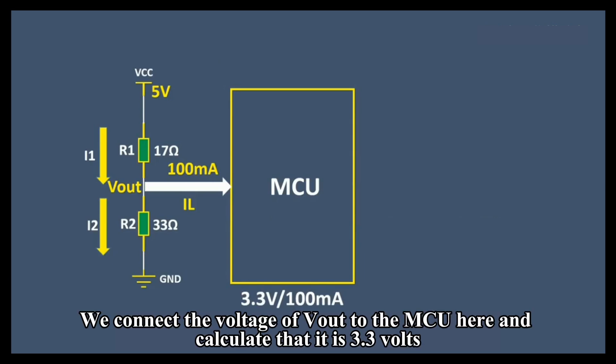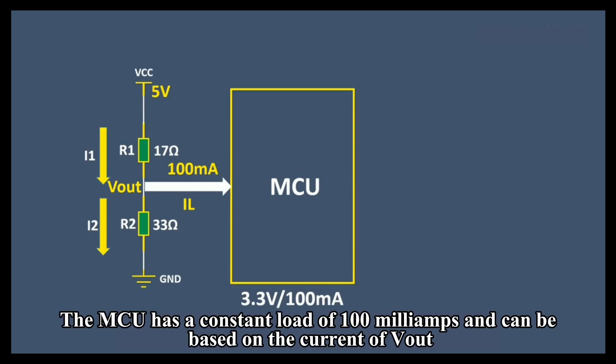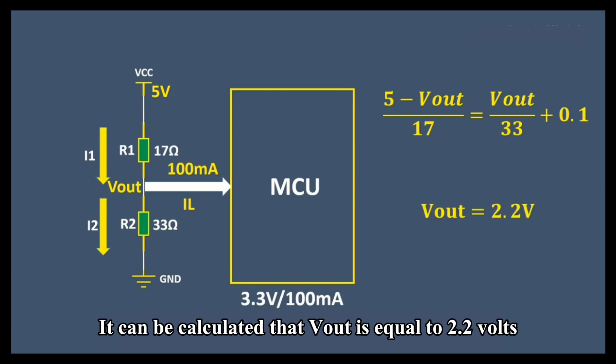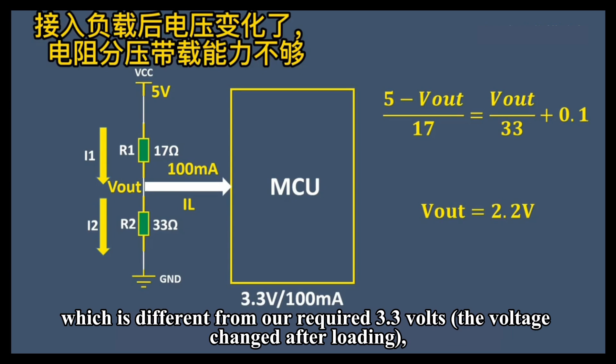We connect the voltage of Vout to the MCU here and calculate that it is 3.3 volts. The MCU has a constant load of 100 milliamps. Based on the current of Vout, the current flowing through R1 above should be equal to the current flowing through R2 plus IL. It can be calculated that Vout is equal to 2.2 volts, which is different from required 3.3 volts.